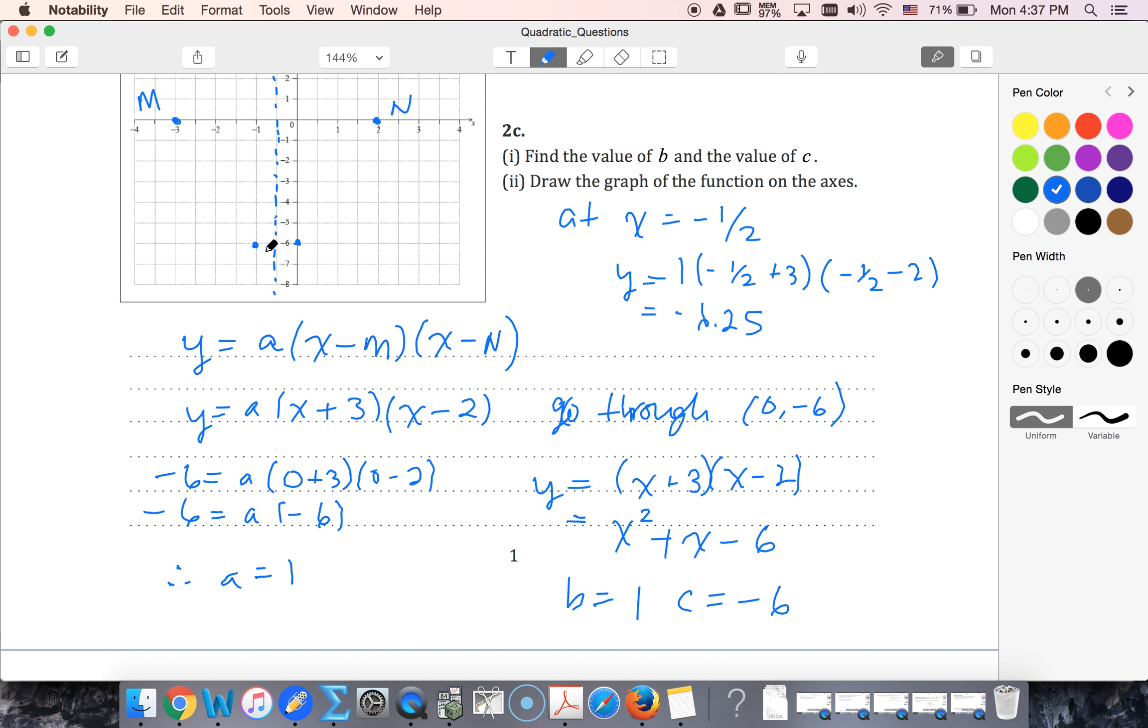I knew it had to be below negative six, so negative six point two five is going to be around there, which lets me draw in my parabola. Trying to get it as smooth as I can as well.